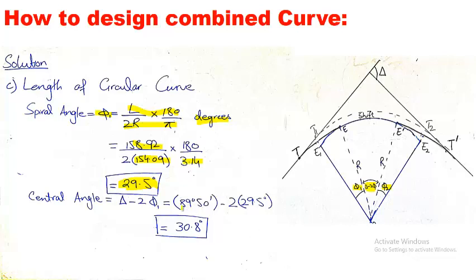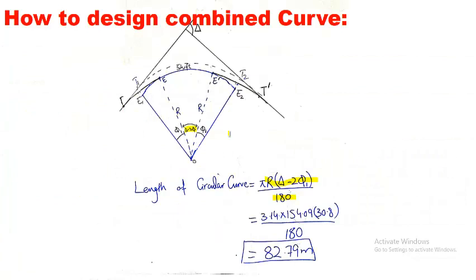Now we calculate the central angle Δ − 2φ₁. Delta (Δ) is the deflection angle given in the data. Substituting the values gives a central angle of 30.8°. Using the formula L_c = πR(Δ − 2φ₁)/180, and substituting the radius and the central angle of 30.8°, we get the length of the circular curve = 82.79 m. This is the arc length from E to E'.